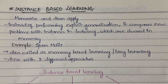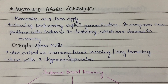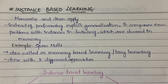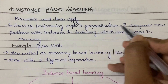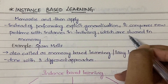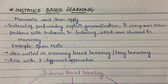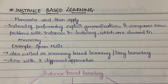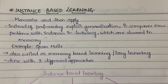In machine learning, we either learn something and apply it, or we memorize something and apply it. Instance-based learning falls under the 'memorize and apply' category. Instead of performing explicit generalization, it compares new problems with instances in training that are stored in memory. A typical machine learns a pattern and responds according to that pattern when a new problem arrives.